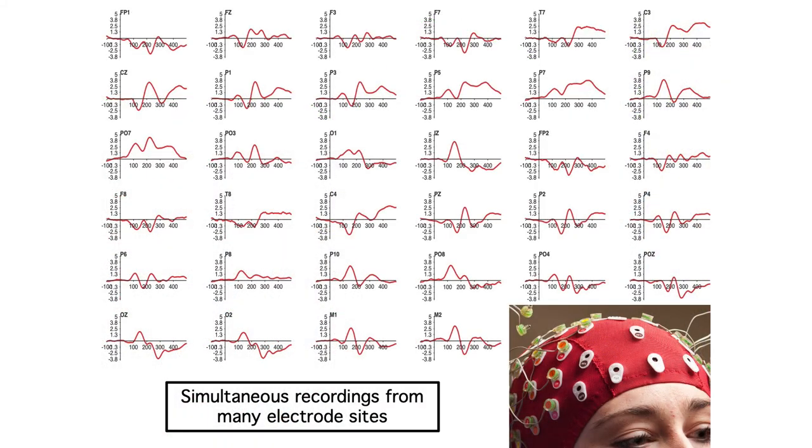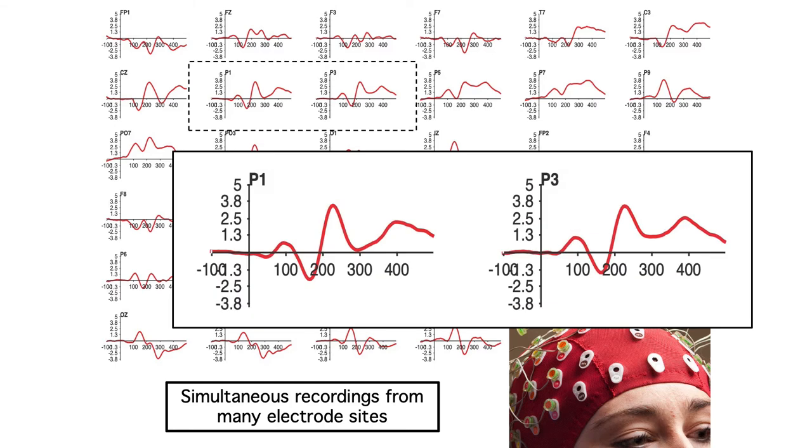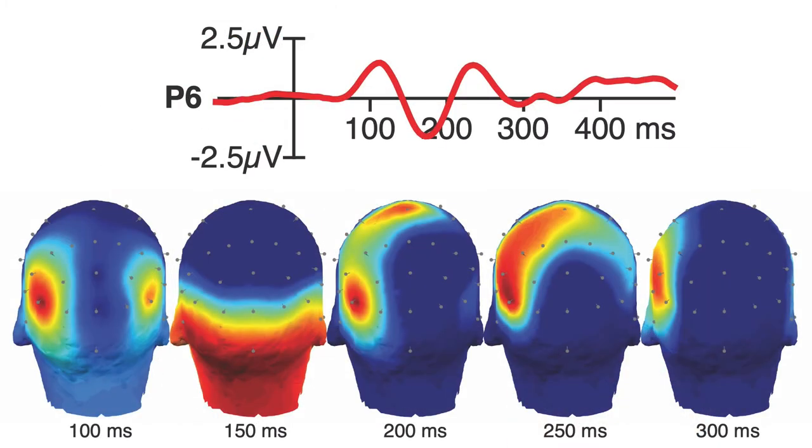We record from many electrode sites simultaneously, but the waveforms at nearby sites are typically quite similar, so there's usually no point in showing all of the electrode sites in a journal article. Instead, we typically show the data from a single electrode site, or maybe a few sites, and then we show scalp maps to show the distribution of voltage at a given moment in time.